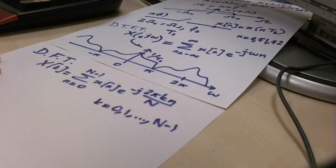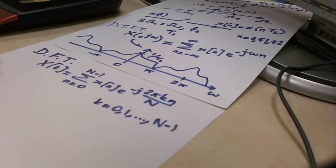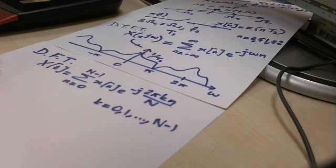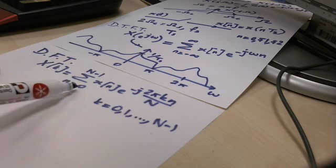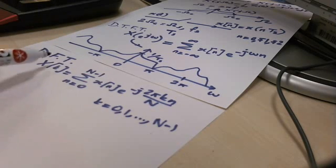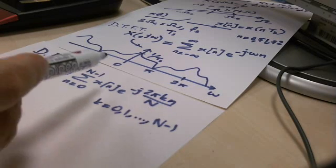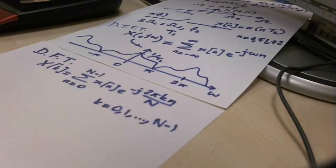Now, clearly, DTFT is an infinite sum. This is a finite sum. Therefore, I cannot perfectly represent the above DTFT. However, if most of the signal energy is in between 0 and n minus 1, then DFT approximates DTFT.